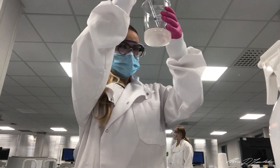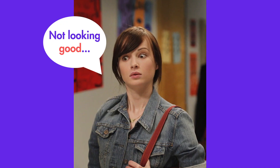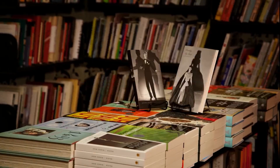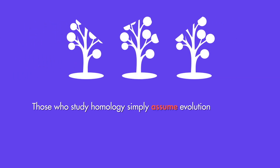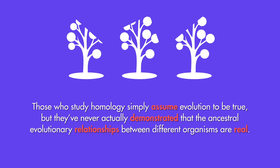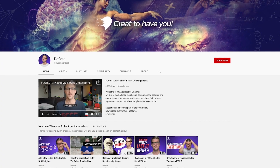To this day, studies in homology based on certain genes, RNA molecules, and anatomical traits continue — and to this day, these studies fail to offer one coherent picture of evolutionary history, even as meta-studies are conducted whose goal it is to integrate several studies into one big picture. After 160 years of studying anatomical homologies and around 60 years of studying genetic homologies, Darwinists have still failed to tell us what the tree of life actually looks like. Those who study homology simply assume evolution to be true, but have never actually demonstrated that the ancestral evolutionary relationships between different organisms are real. Check out my channel Deflate if you want to hear more, or go to intelligentdesign.org to learn more about the issues discussed in this video.